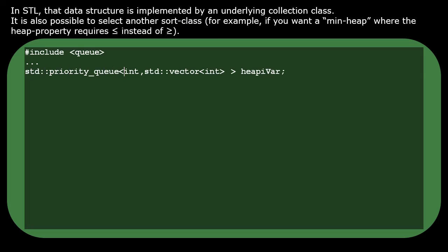By default, STL uses this sort class, which causes the normal heap property to be enforced, where the tree root contains the binary heap's largest item. But you could select some other sort class. For example, it's common that some other applications want to have a min heap, where the heap property enforces the opposite inequality.